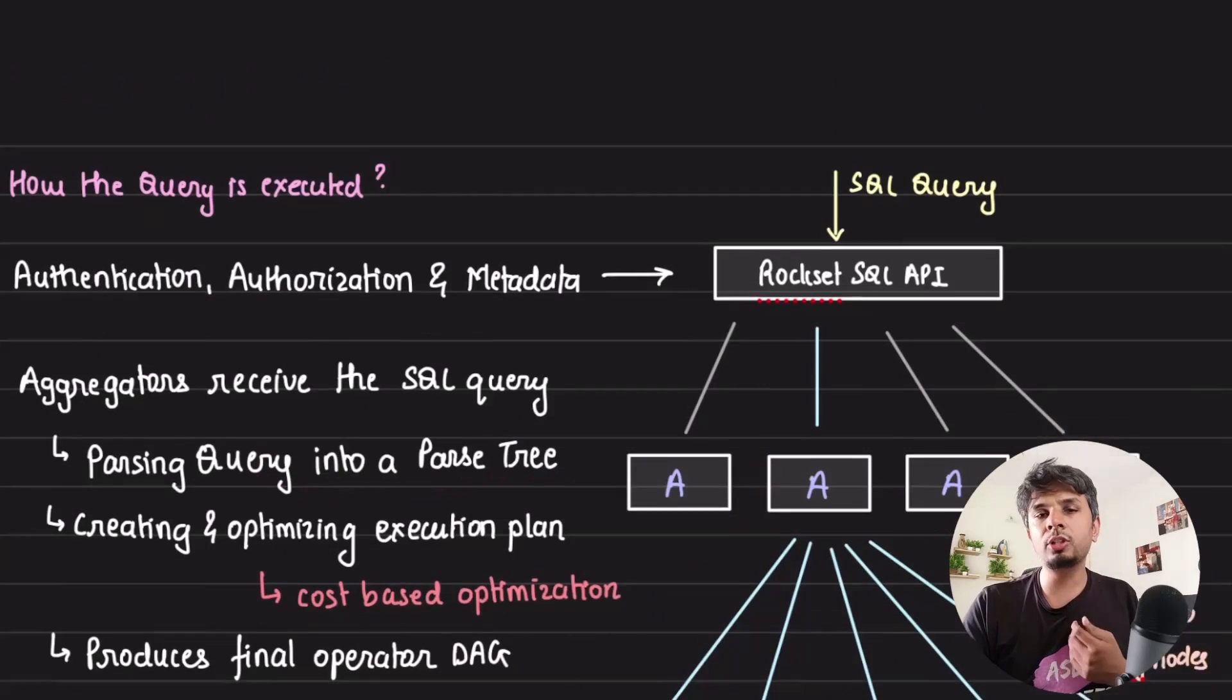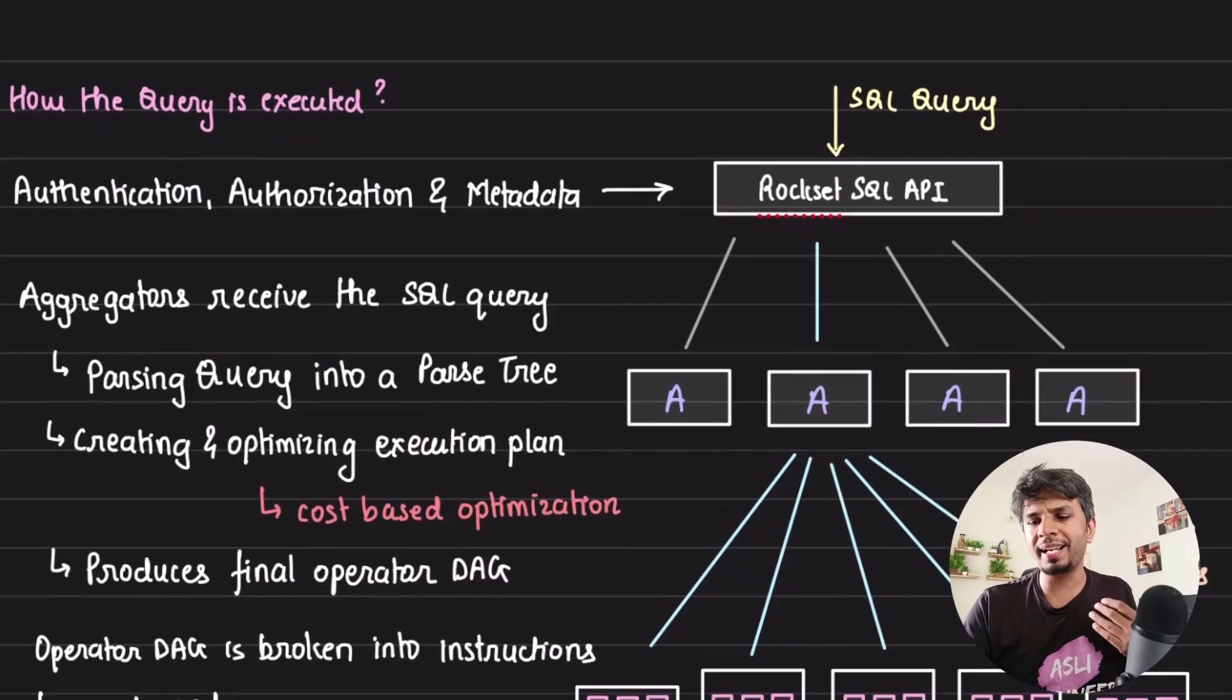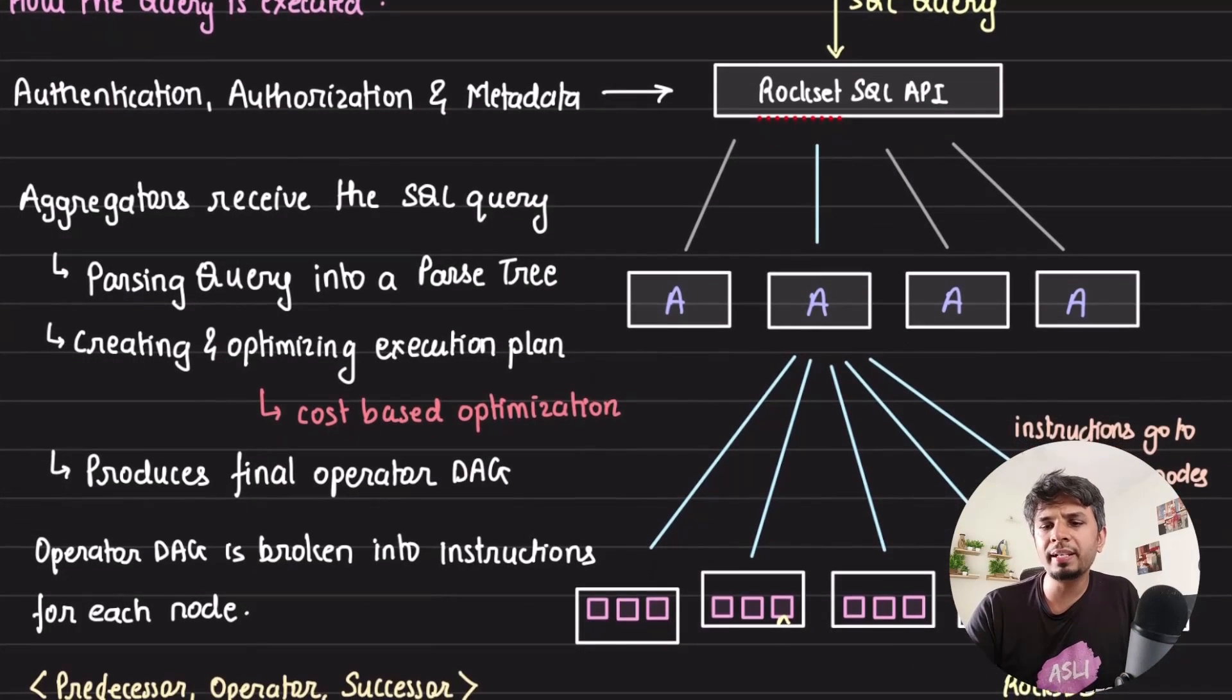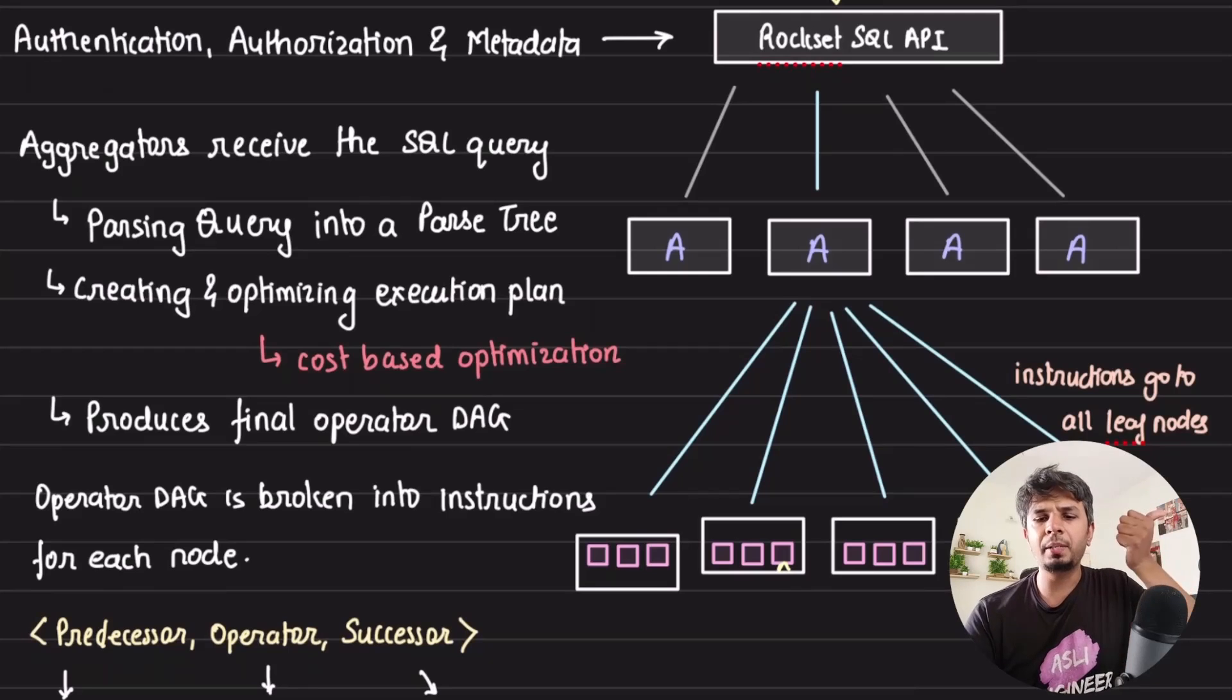The query comes to the Rockset SQL API which then goes to the aggregator nodes. The Rockset SQL API takes care of authentication, authorization, and all the metadata management. Then the aggregator receives the SQL query. The aggregator does what a typical SQL query execution engine does - it parses the query, creates a parse tree, creates and optimizes the execution plan. It uses a cost-based optimizer like almost all standard optimizers that exist, and then it creates a final operator DAG.